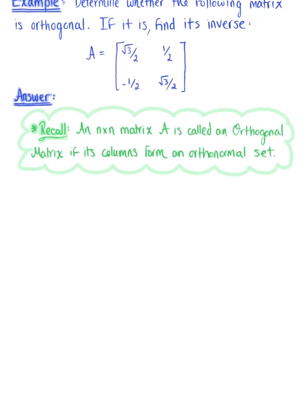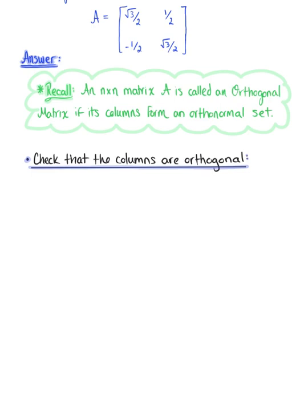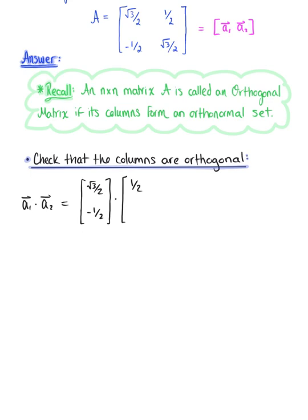The first thing we want to check is: are these columns orthogonal? I'm going to let the first column vector be a₁ and the second column vector be a₂. To determine if these column vectors are orthogonal, we need to check if the dot product is equal to zero. So we are taking the dot product of (√3/2, −1/2) with the vector (1/2, √3/2). Computing this dot product, we have √3/4 minus √3/4, which equals zero. So we can say that the columns are orthogonal.